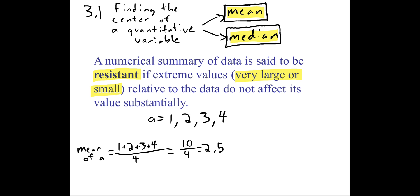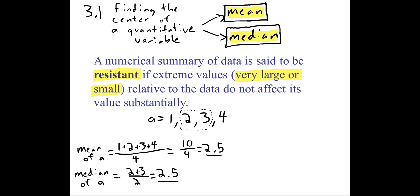Now let's find the median. The median is just the middle, and we said if there's an even number of observations, the median is the average of the two numbers in the middle. So our median is going to be the average of 2 and 3, which is exactly the same as the mean — it's 2.5. The mean and the median for this data set are exactly the same right now.